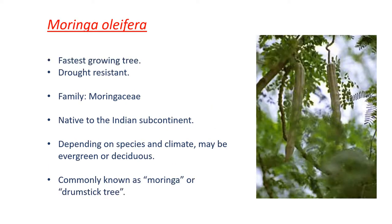Moringa oleifera is the scientific name for the Moringa tree. It is a fast-growing, drought-resistant tree of the family Moringaceae, which is native to the Indian subcontinent. Depending upon the species and climate, the Moringa tree may be evergreen or semi-deciduous in type.